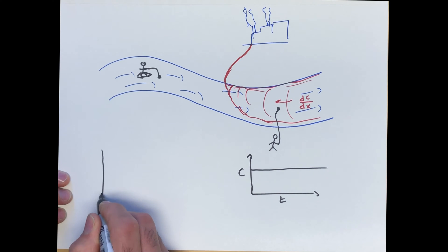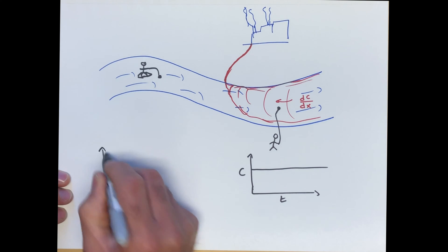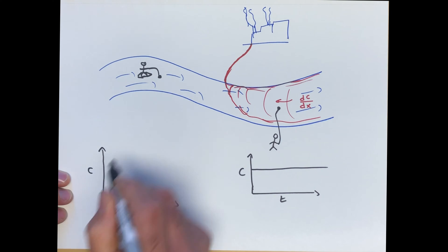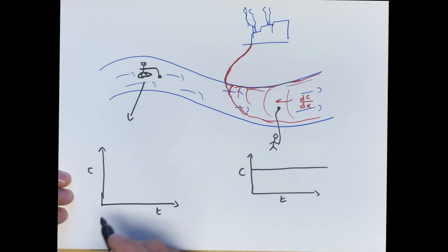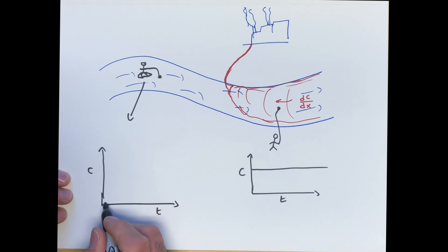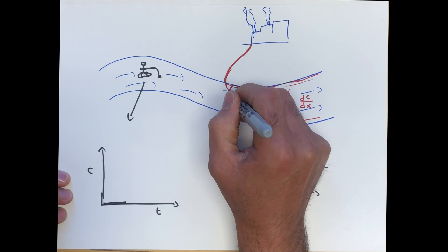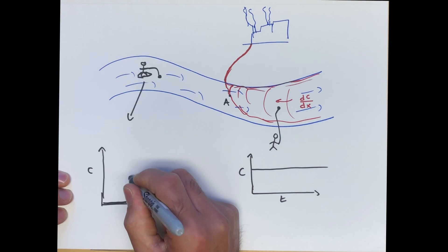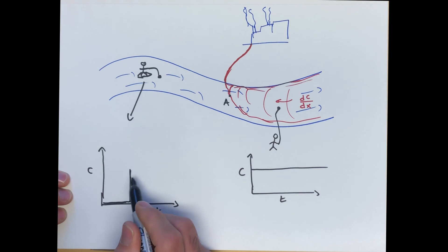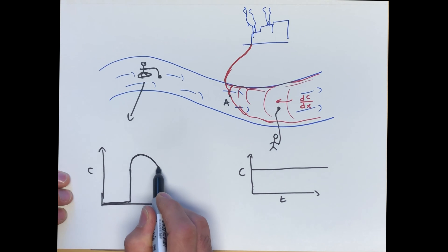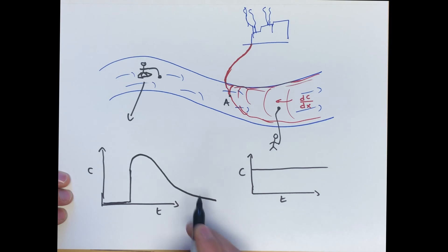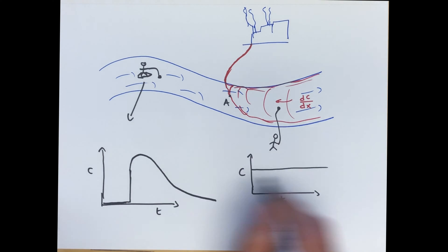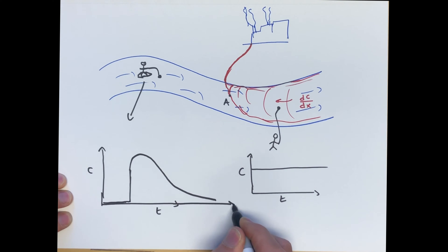Initially, from the perspective of the student on the boat, they're not going to measure anything until they hit point A. Then they're going to get a spike in concentration, and then it's going to go down because there is a concentration gradient in space. But from the perspective of the boat, they're measuring this change with respect to time.